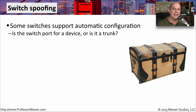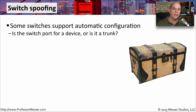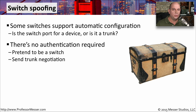With switch spoofing, the attacker takes advantage of a capability inside the switch that automatically determines what's connecting to an individual port — whether that is an access port, which would be an end user device, or a trunk interface — and configures itself automatically for that trunk interface. On most switches, this auto-negotiation of port types has no security associated with it. You don't have to authenticate or prove that you are who you say you are. You simply send a trunk negotiation to that interface, and the switch assumes you are a trunked interface.